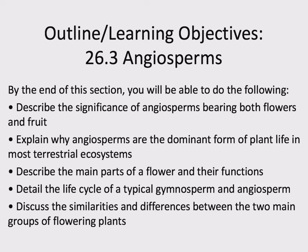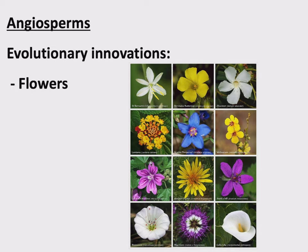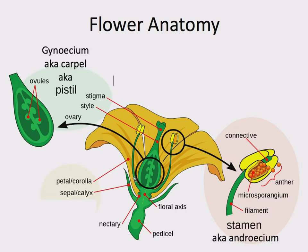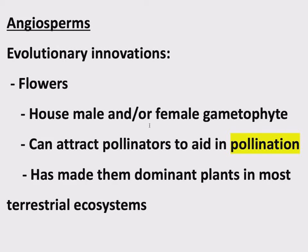Angiosperms are seed plants, vascular plants, and land plants. The evolutionary innovation that angiosperms have that gymnosperms do not have is fruit and flowers. Flowers come in all sorts of different sizes, colors, and arrangements, but what is actually going on? The purpose of the flower is to house male and/or female gametophytes. We had cones in gymnosperms; here we have flowers housing both male and female gametophytes. Flowers can also attract pollinators — something cones couldn't do.